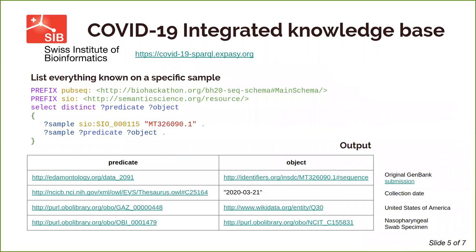Moreover, the Swiss Institute of Bioinformatics has included COVID-19 PubSeq data in its knowledge base. Indeed, the uploaded metadata and the outputs are transformed into RDF databases. This means that it's possible to query this data using SPARQL and ontologies. For example, this query tells us when the reported sample was submitted, that it originated from the USA, and is a biospecimen collected from the back of the throat by swabbing.